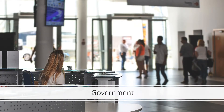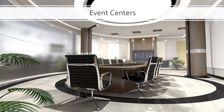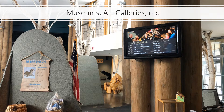Government offices are another great place for digital signage, where people can be informed while they're waiting or told what number they are in the queue. Event centers — you can show upcoming events on digital signage so that people know which room the event is in and what time it starts. Museums, art galleries, any kind of place where you've got events, things happening, programs — digital signage is just a great way to be able to show this.